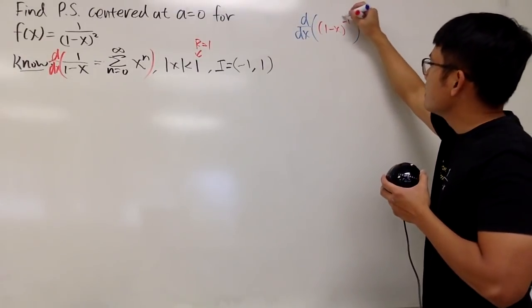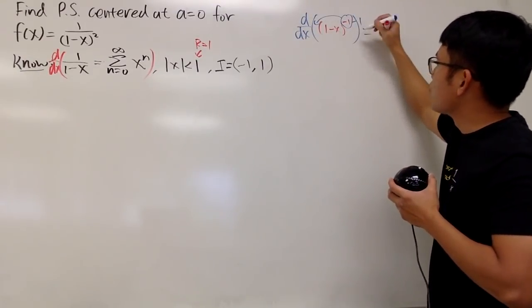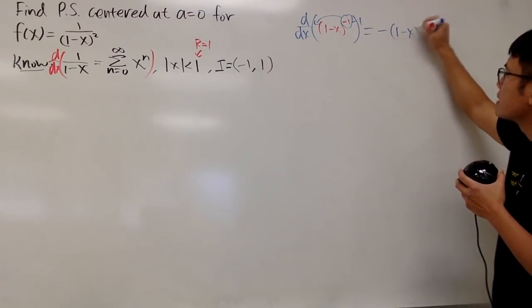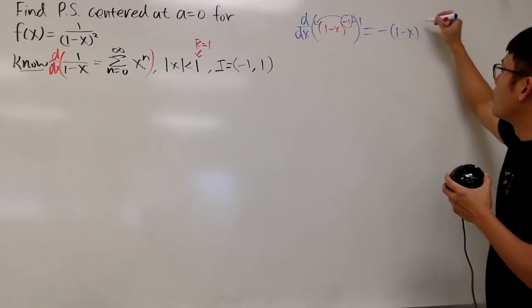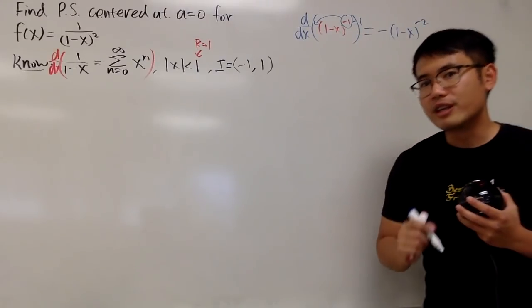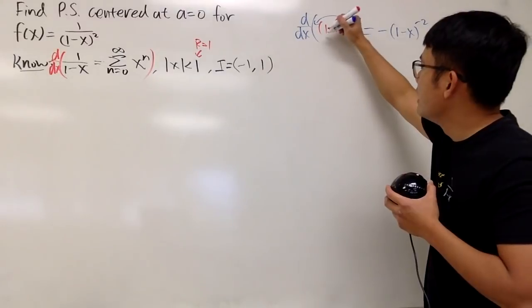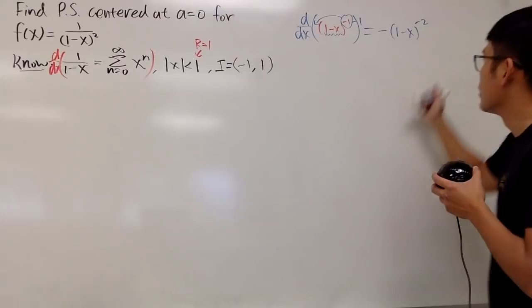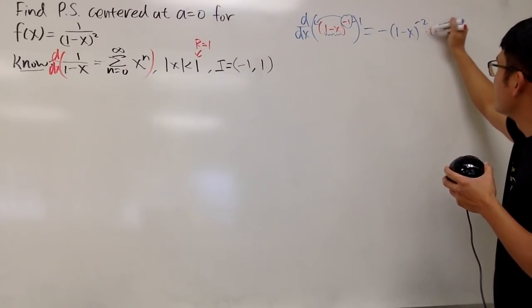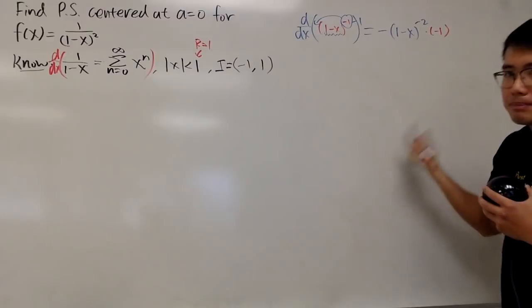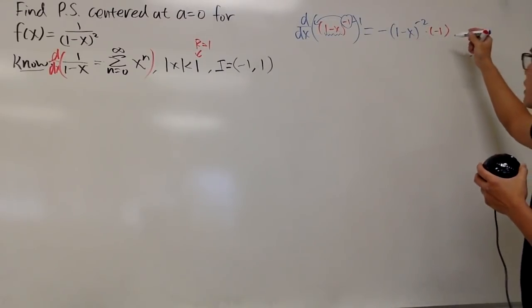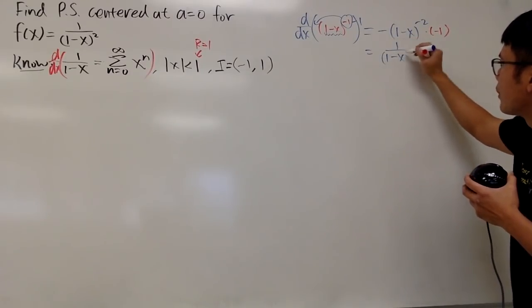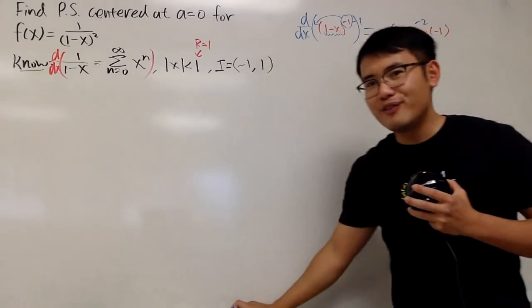When we do that, we can bring the power to the front and then minus 1. So we get negative, and then (1-x) raised to the -2 power. But don't forget the chain rule. We have to multiply by the derivative of the inside. The derivative of 1-x is -1, so we multiply by -1. This times that, it's positive. This can go down to the denominator. So all in all, we get 1/(1-x)² squared. Very nice.